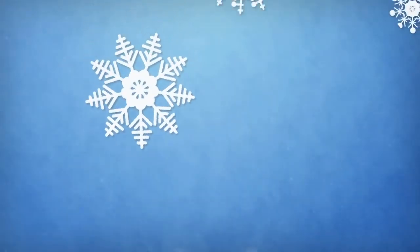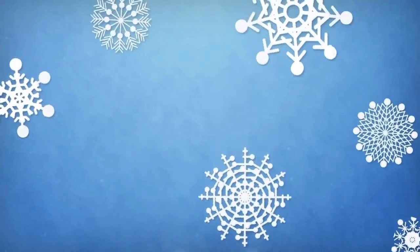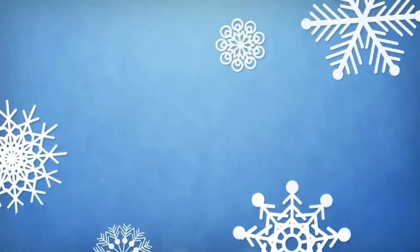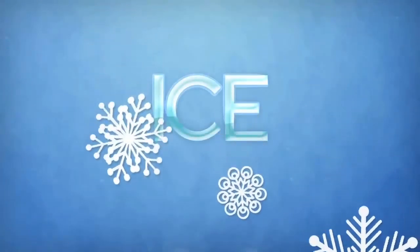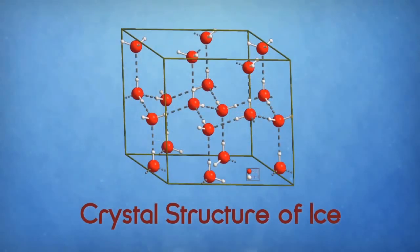The snowflake might be the world's favorite symbol of winter. These surprisingly complex and beautiful shapes are made of ice, nature's simplest hydrogen bonded crystal. But how are these delicate structures formed?